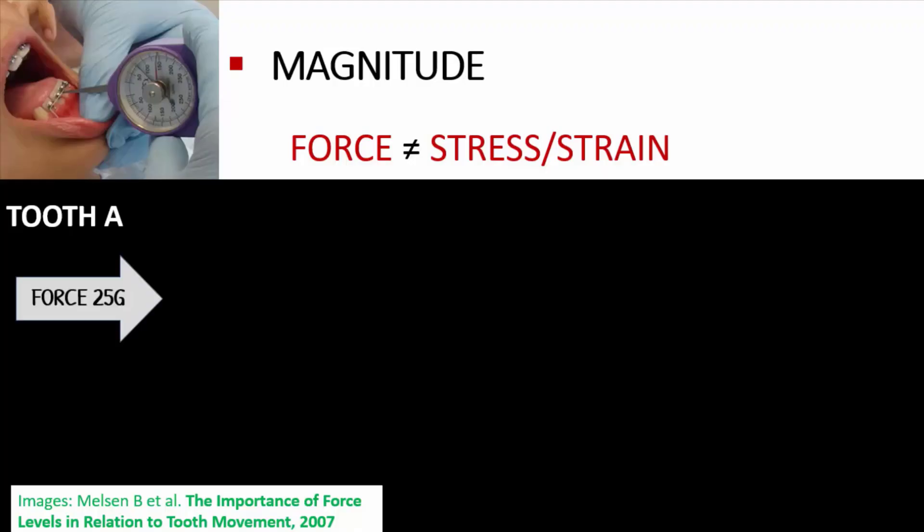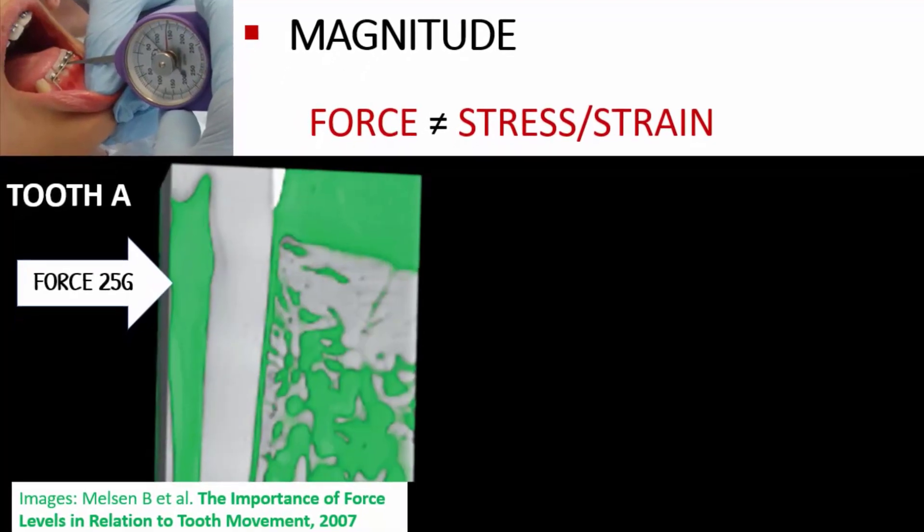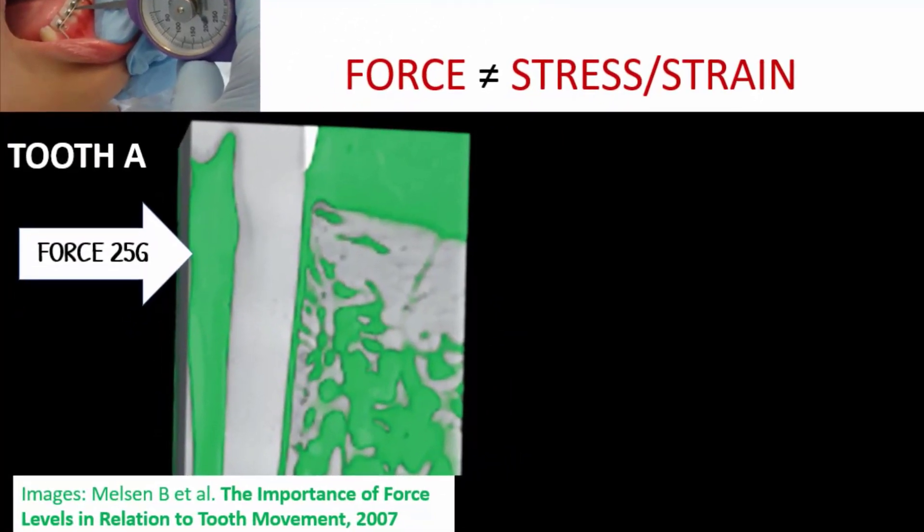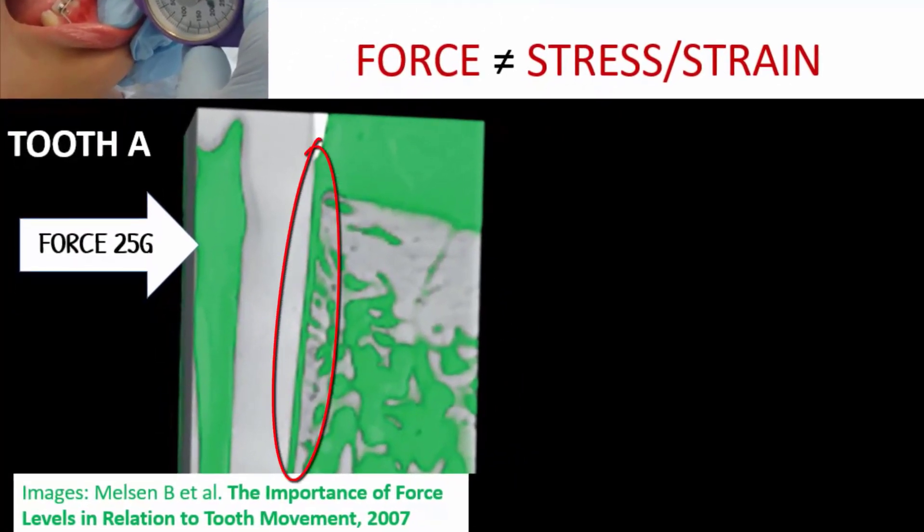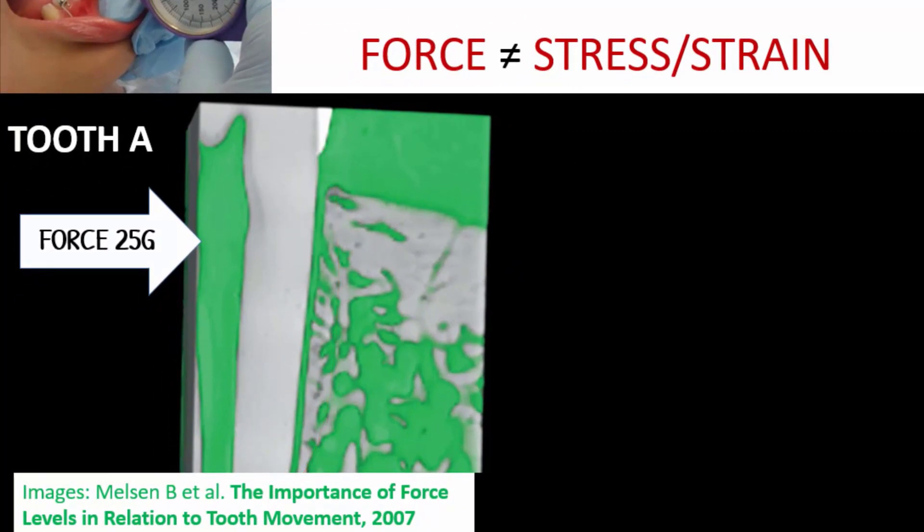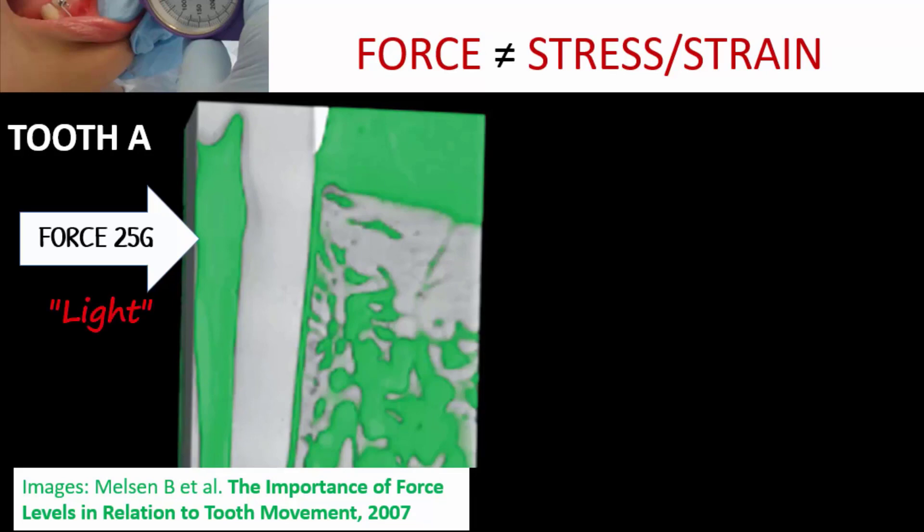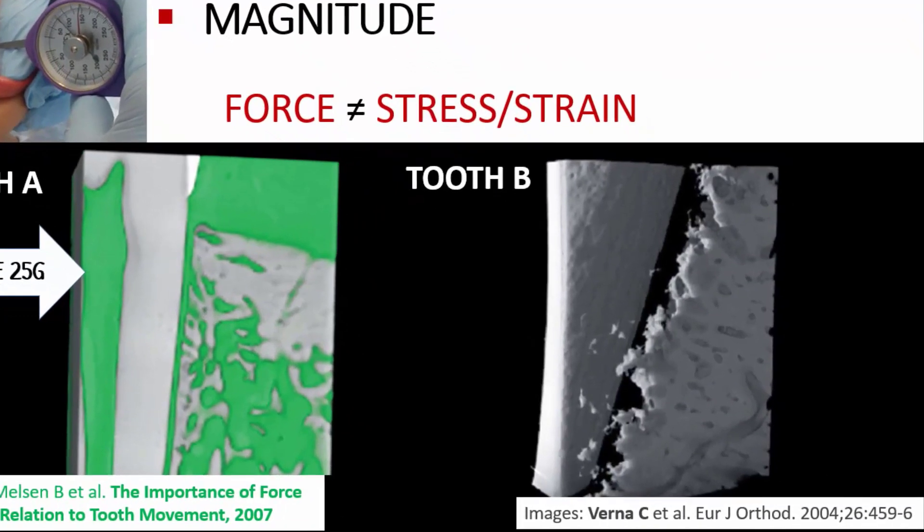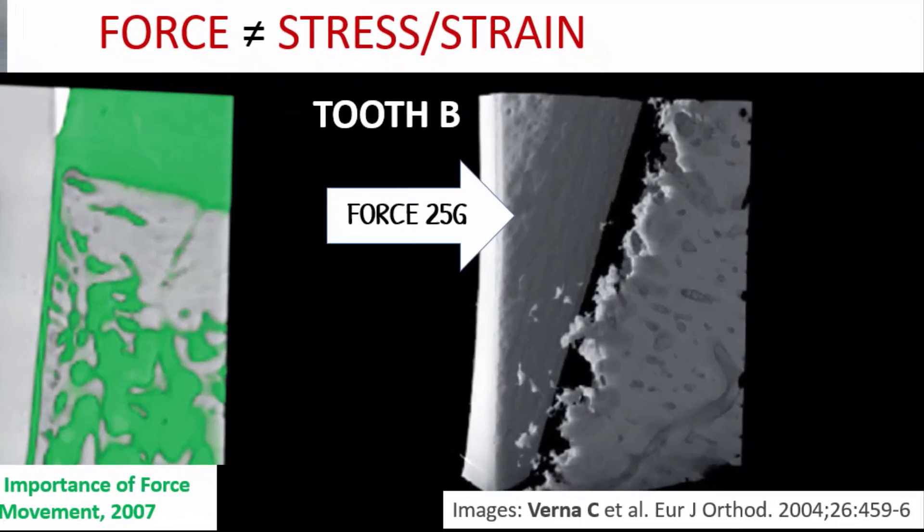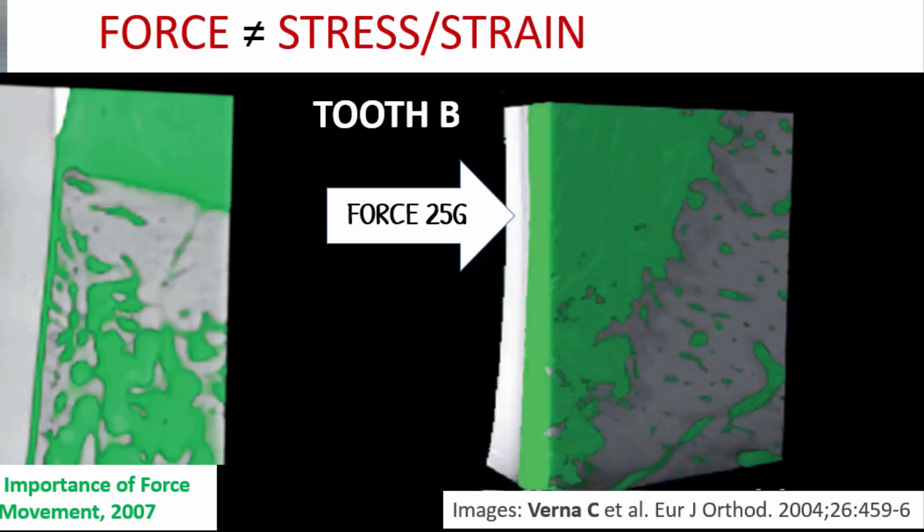For example, if we apply a force considered light, such as 25 grams, in a smoother and homogeneous alveolar ligament-bone interface, this force will probably not cause much damage and tissue strains, being therefore considered light from the biological aspect. However, if the same force is applied in a more irregular and root ligament-bone interface, for example, the tissue strains will be larger, leading this force to be considered heavy in this situation.